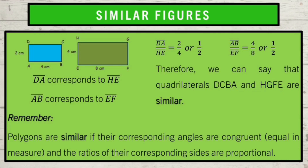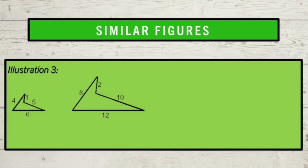Now that you know what makes polygons similar, you can answer: how do you express the proportionality of the sides using ratios? We will mix the ratios and equate them. The answer is what we call the scale factor. It is a number that describes the ratio of two corresponding sides of similar polygons.